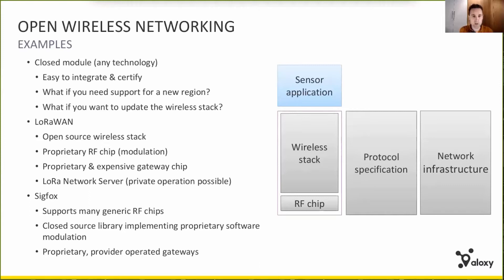Another example is LoRaWAN. Here you already have multiple open source stack implementations available, which is a good thing. You do have a proprietary RF chip, however, and also a proprietary and pretty expensive gateway chip. On the network backend side, you need a LoRa network server, of which there are multiple commercial but also open source options. The good thing is that you can host it in a private network and operate it yourself. Even so, there is still some possibility of lock-in — for example, in the previous generation of the radio chip it was possible to implement other protocols using other modulations, but the latest revision of the chip makes this already a bit harder.